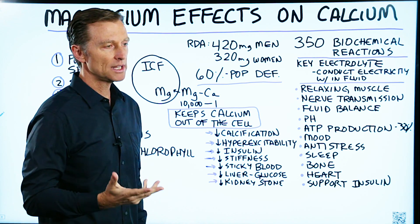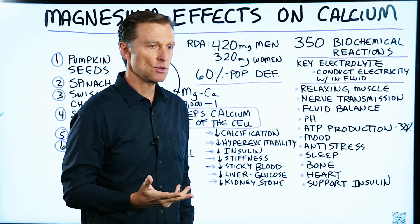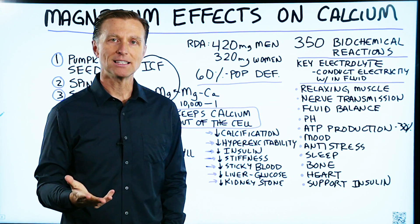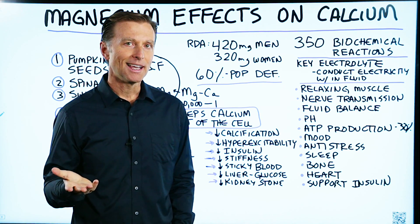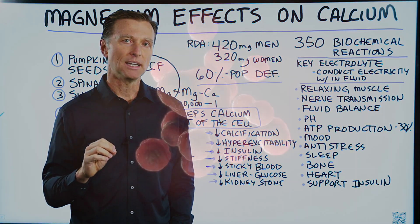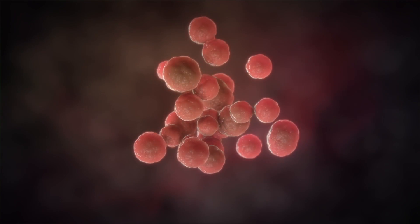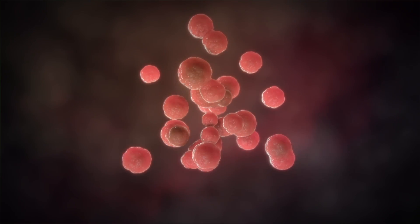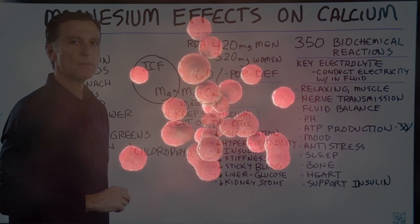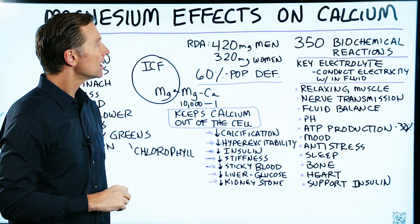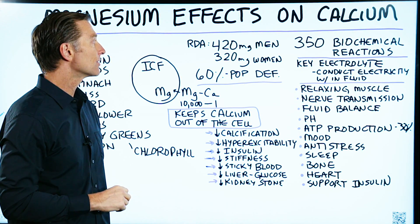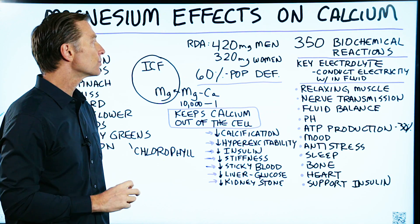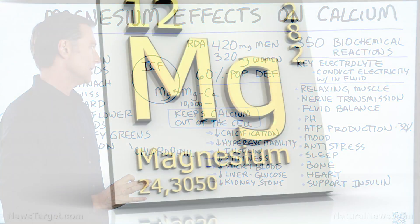So when you get a blood test and find that your magnesium levels are normal in your blood, it doesn't really mean anything because most of the magnesium is inside the cell. The RDAs for magnesium in men are 420 milligrams, and for women, 320.